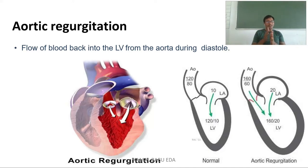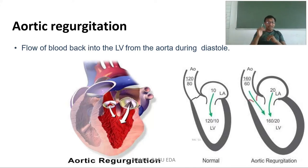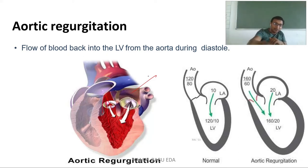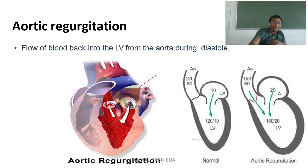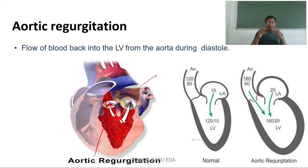Regurgitation means backflow. In aortic regurgitation, blood that has entered the aorta through the left ventricle comes back. Normally, blood from the left atrium enters the left ventricle, then goes into the arch of aorta toward the body. But due to valvular dysfunction, blood re-enters the left ventricle from the aorta.